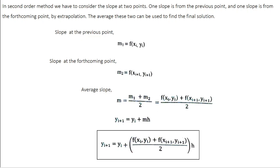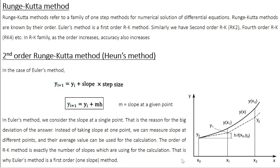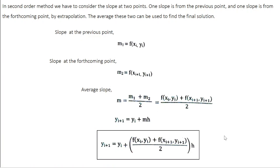Coming specifically to the RK2 method: in the first sub-interval you have points (xi, yi) and (xi+1, yi+1). The slope at the previous point is m1 = f(xi, yi), and the slope at the forthcoming point is m2 = f(xi+1, yi+1). The average slope is m = (m1 + m2) / 2, which equals [f(xi, yi) + f(xi+1, yi+1)] / 2. Using Euler's formula, you can predict the next y value as yi+1 = yi + m·h, where m is now the average slope.